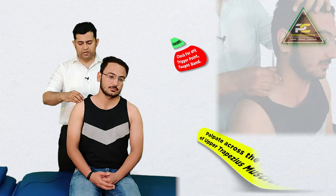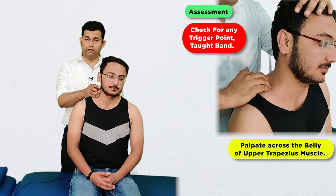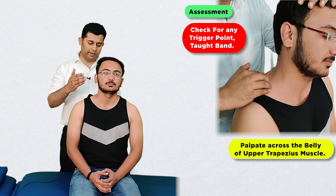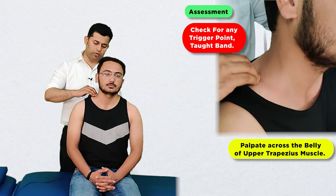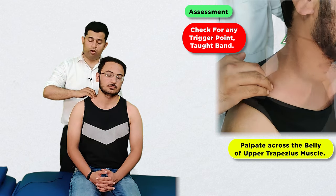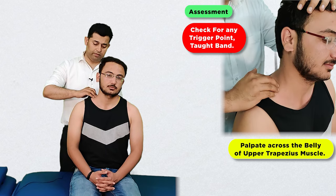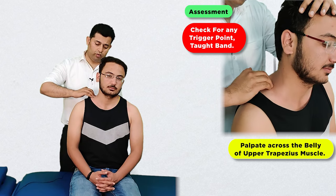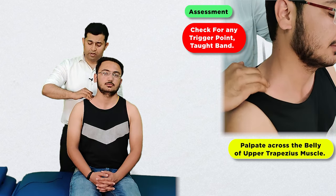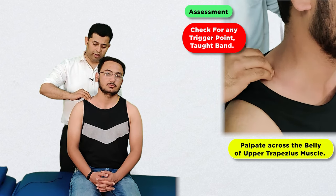It is the upper fibers of the trapezius muscle which are involved, and to examine this the therapist is going to go across the orientation of the muscle fiber and look for the presence of taut bands or trigger points.